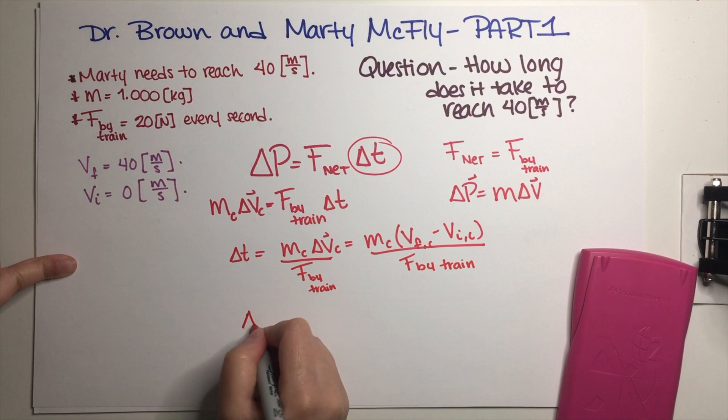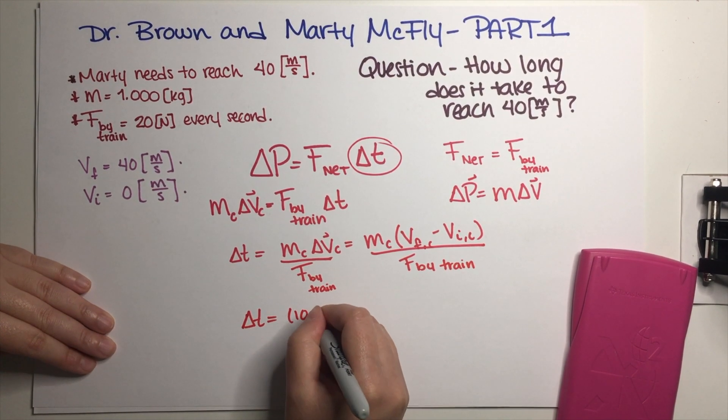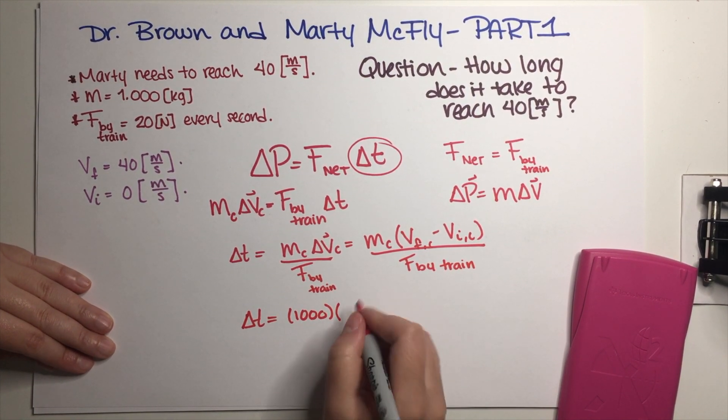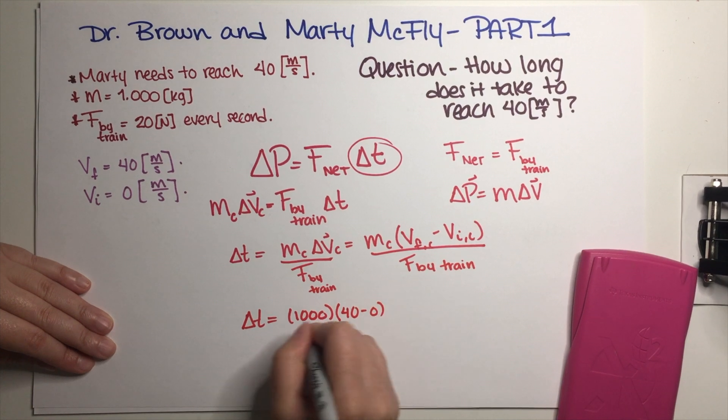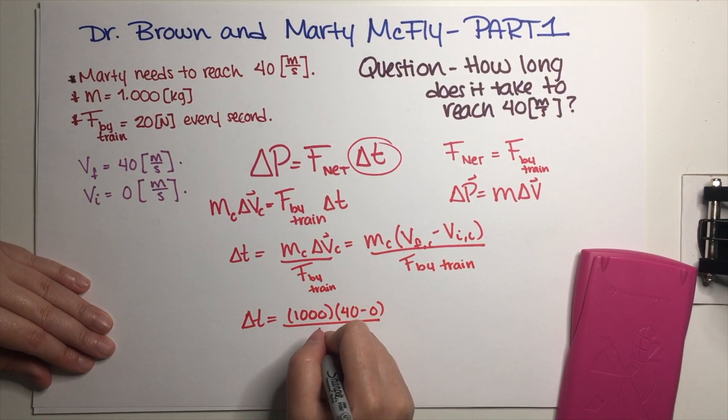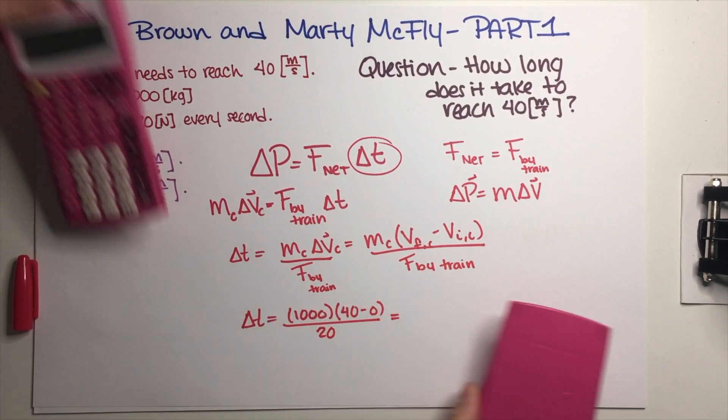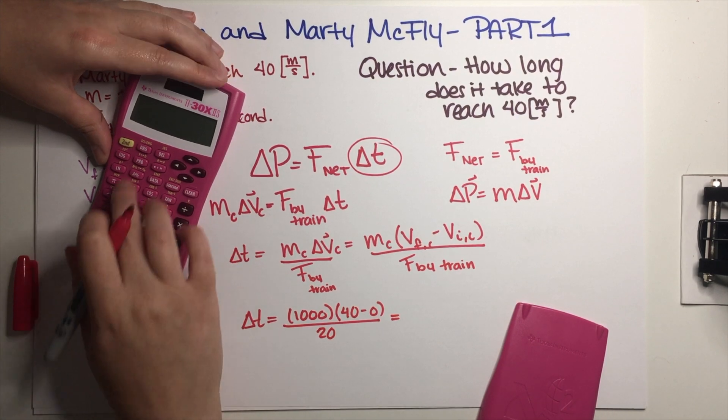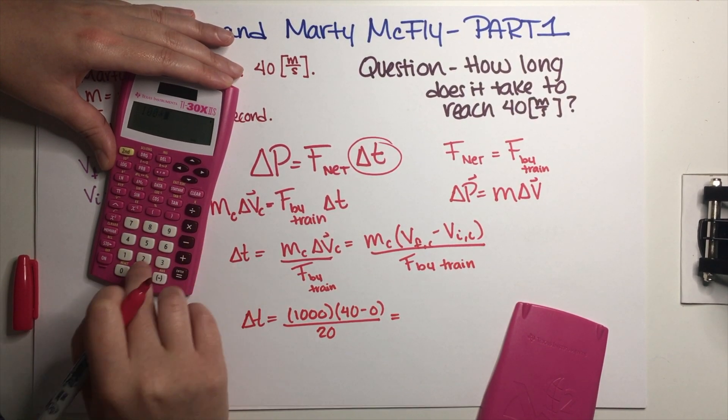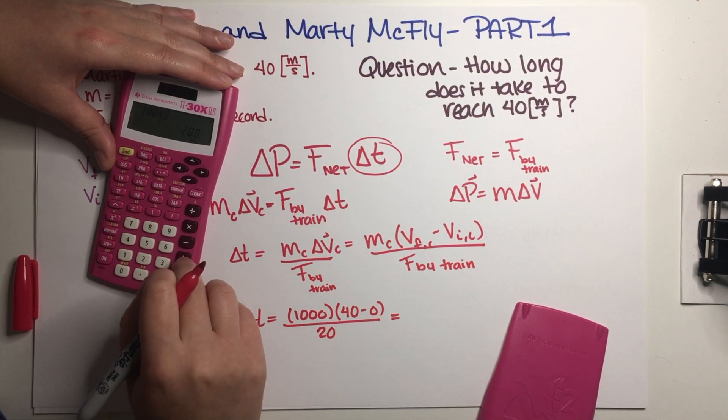Now we just basically have to put in some numbers. Mass of the car is equal to 1,000, final minus initial, this is going to be equal to 40 minus 0, and force by train is 20 every second, so we just put a 20 in here. Just putting these numbers in our calculator, this is 1,000 times 40 minus 0 divided by 20, which equals 2,000 seconds.